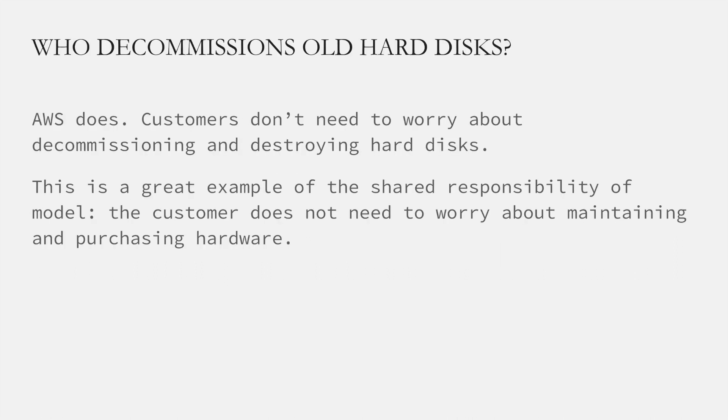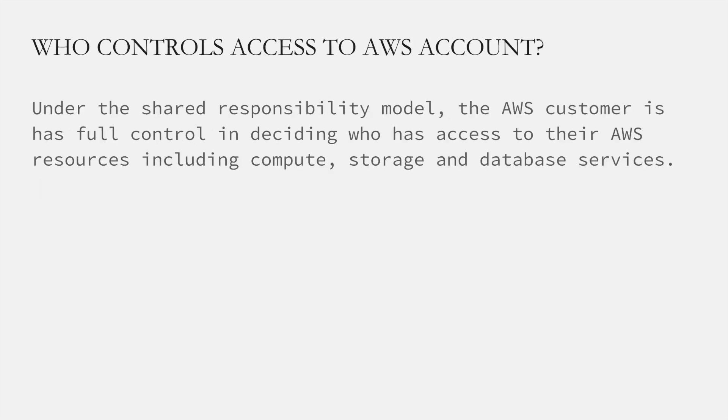Looking at a couple of scenarios: who decommissions old hard disks when they're no longer used? AWS does, because they take care of all the physical things on the cloud — customers don't need to worry about decommissioning and destroying hard disks. And who controls access to the AWS account? Under the shared responsibility model, the AWS customer is responsible for giving access to other users on their account. AWS gives you a root user access, and after that, you are the one giving access to other people on your account.